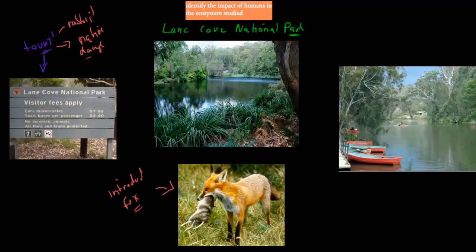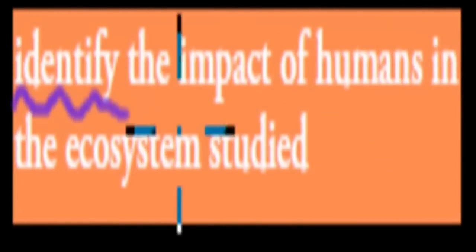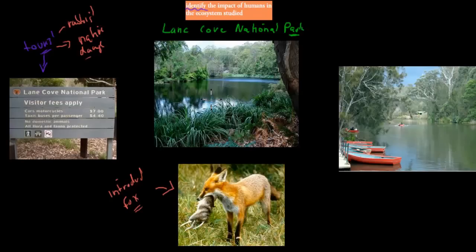The reason I'm talking about this is because the dot point says: identify the impact of humans in the ecosystems studied. 'Identify' means name. So we have to name some of the impacts of humans in the ecosystems you studied. They might be similar to Lane Cove National Park or quite different, so we're going to name quite a few different types, and you've got to think about which one is relevant for your ecosystem.